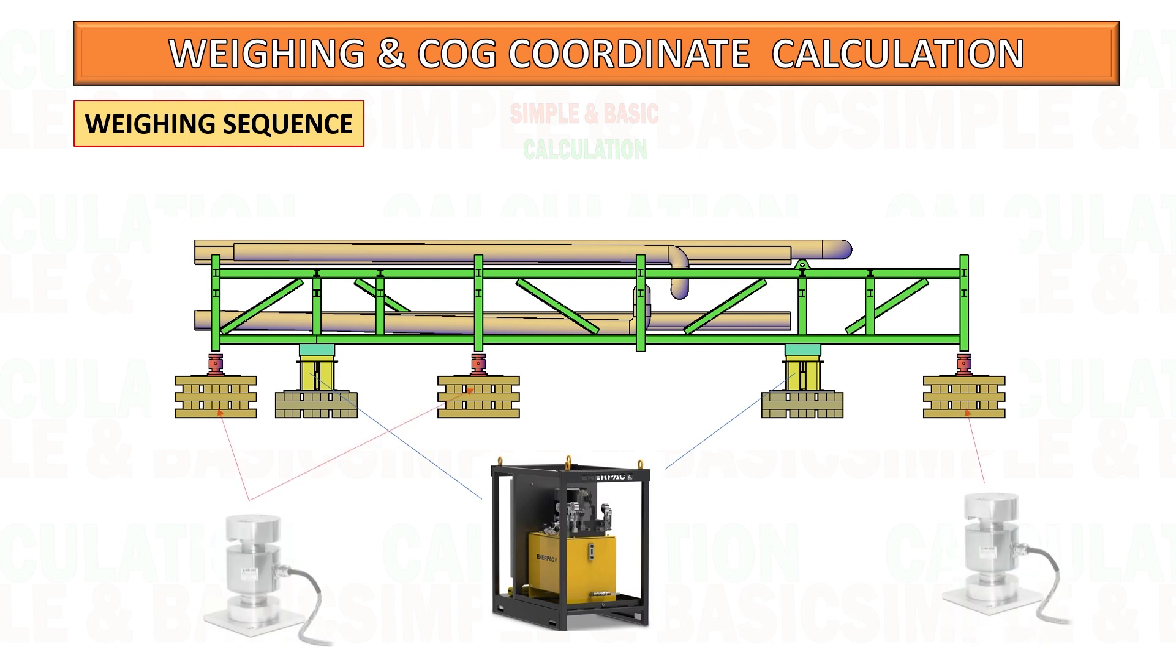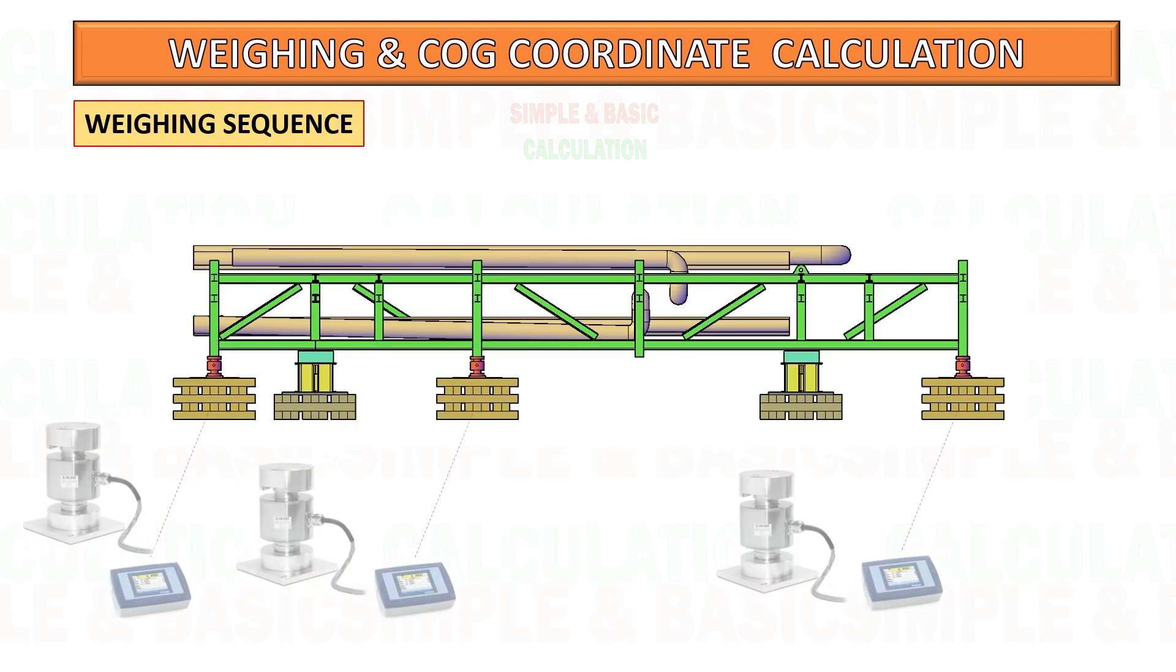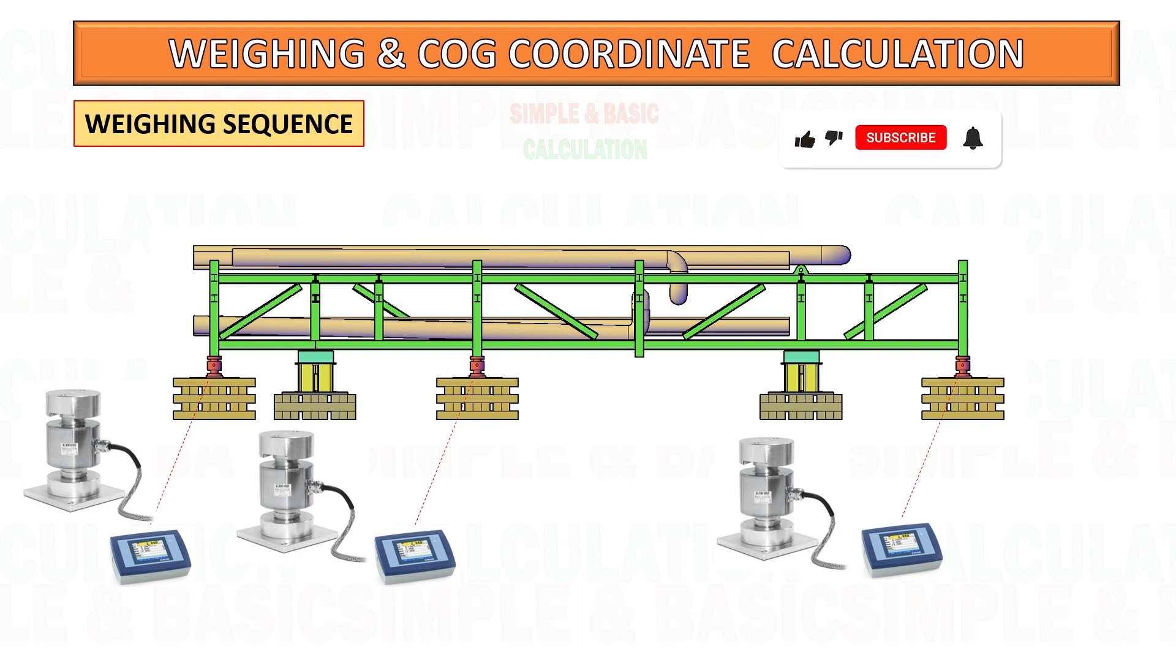Once the load cell is in place, the hydraulic jack will slowly lower down the cargo onto the load cell. The load cell will transmit the data into the computer. This method will be repeated three times and each data to be recorded.